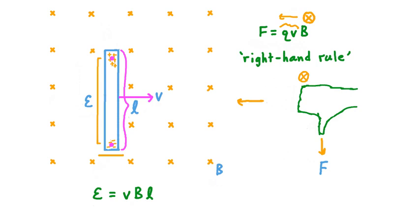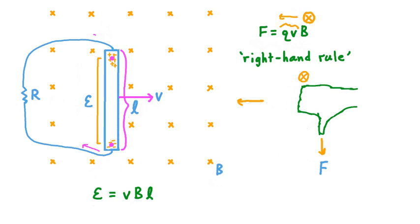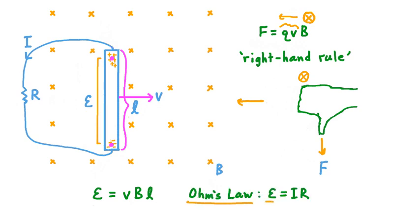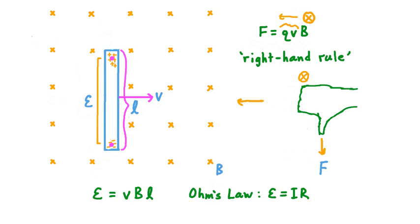By establishing an EMF across this conductor, essentially what we've created is a battery — something with the energy to move charge through a circuit. Imagine that as our bar moves along we connect both ends with a conducting wire, and say that all the resistance of the wire and the bar is summarized by a resistance value R. Our conductor has become a battery and will tend to make charge flow through this wire. Electrons move away from the negative end of our conductor toward the positive end, so the flow of negative charge is clockwise through this loop, meaning the direction of conventional current is counterclockwise. If we know the EMF and resistance R, we can use Ohm's law to solve for the current I. Of course, all this only comes into play if we have a closed loop — if we just have a straight conductor by itself moving through a magnetic field, an EMF is created but no current.